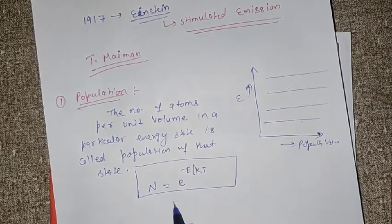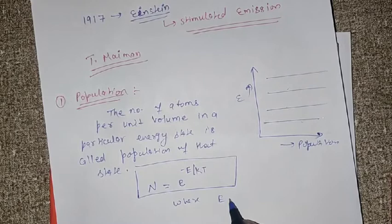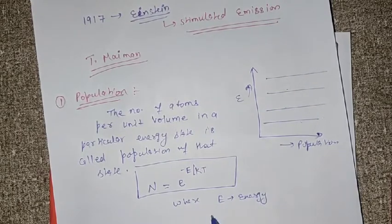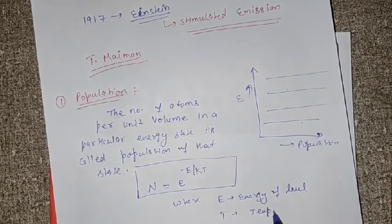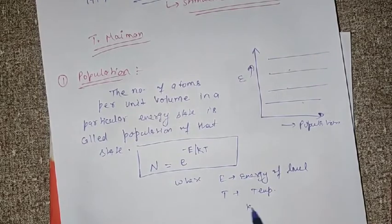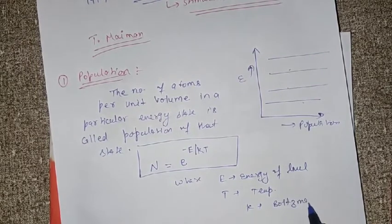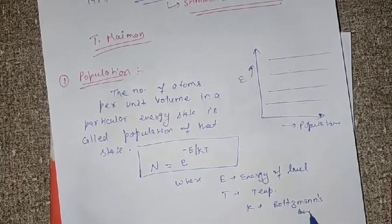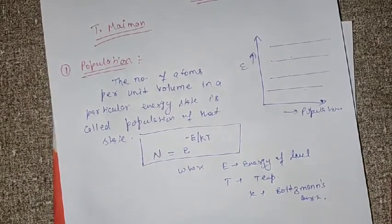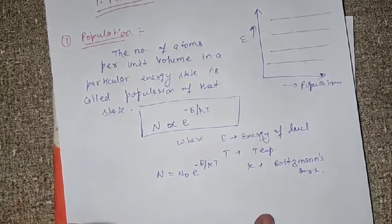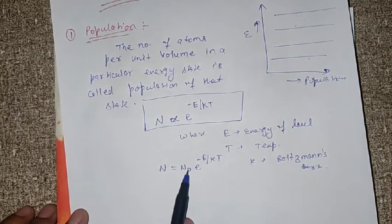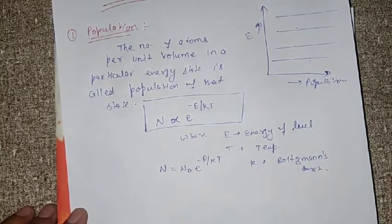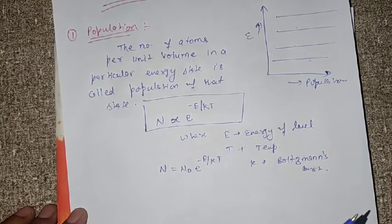The first laser was discovered by T. Maiman. But the idea of laser in 1917 was Einstein's. Einstein has given the idea of laser. He said that there are two processes — absorption and spontaneous emission — and both of them need to balance. There should be a third process: stimulated emission. And this is the base on which the first laser was discovered.